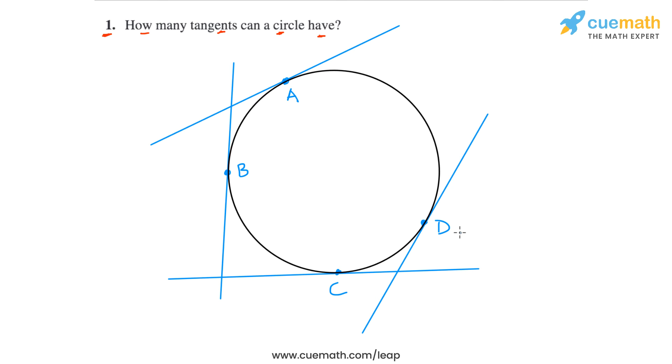These are just four tangents I've drawn. But you can see that in this manner, I can draw infinitely many more tangents to this circle. I can take any point on the circumference of the circle and draw a tangent to the circle at that point.